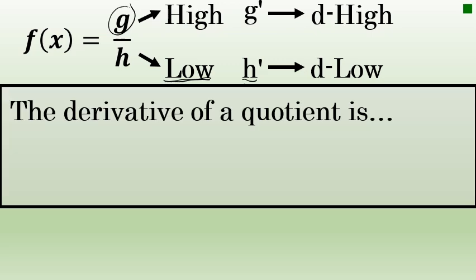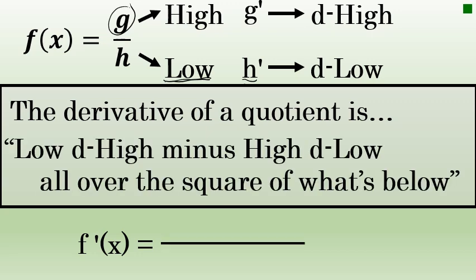Using those names, the derivative of f of x is: low d high minus high d low, all over the square of what's below.